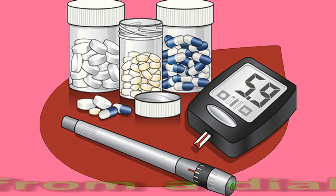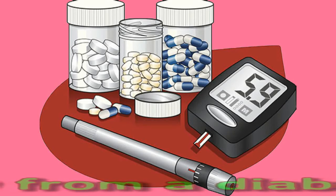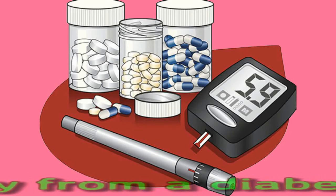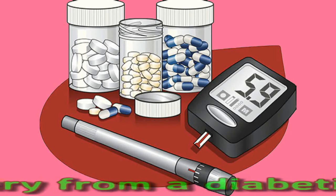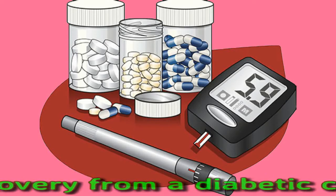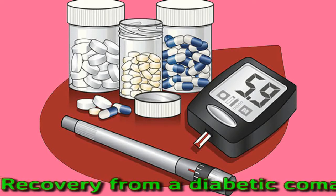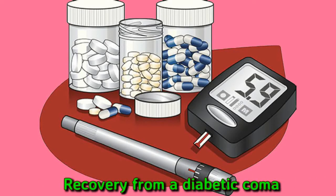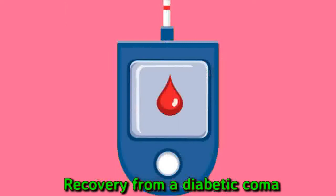A doctor can reverse a diabetic coma quickly, but the treatment depends on the type and must be done as quickly as possible to prevent complications. Hypoglycemic diabetic coma treatment involves glucose and injected glucagon. For hyperglycemic diabetic coma, the doctor will provide hydration and insulin. The person will start to recover quickly after treatment begins.